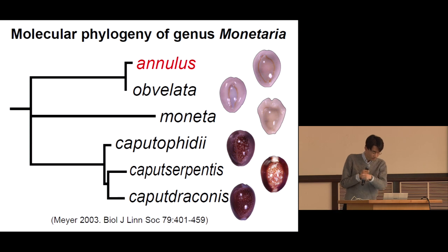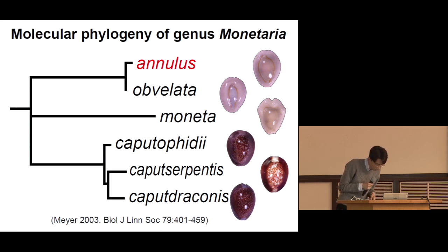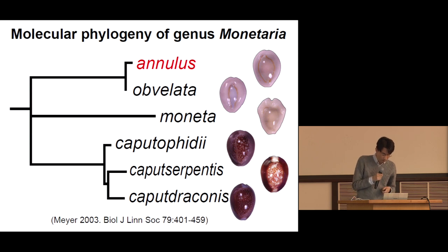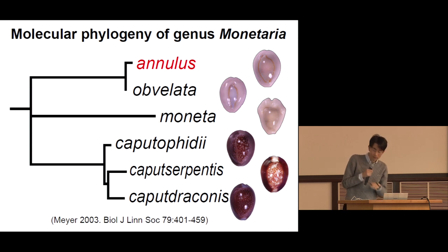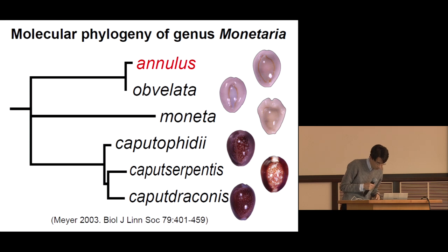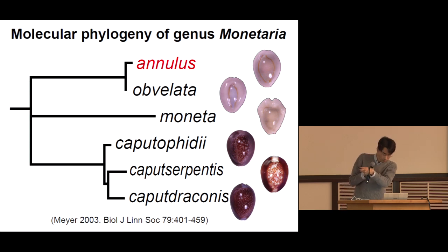Among them, genus Monetaria is suitable for ecological study because they are found in the intertidal zone. These six taxa belong to the genus Monetaria, and I'm focusing on Monetaria annulus at present.